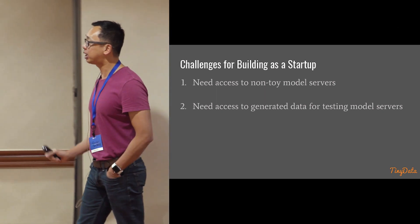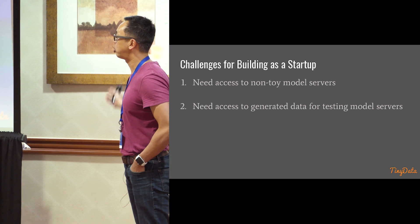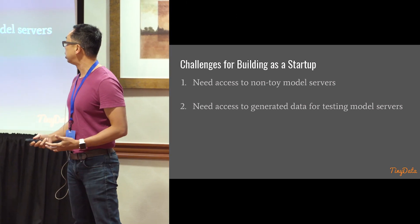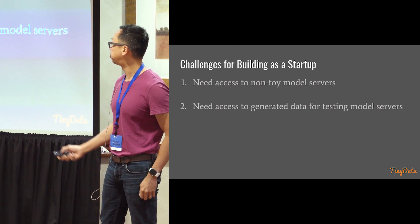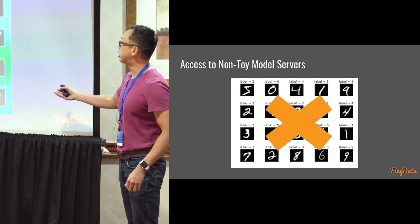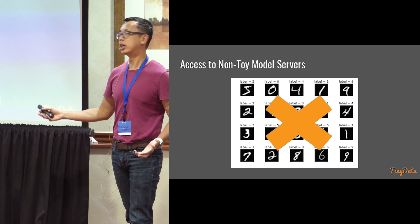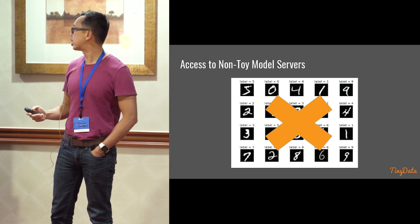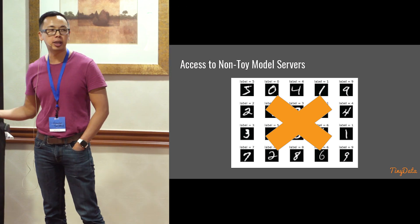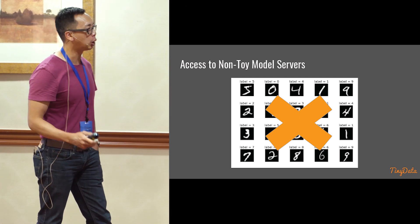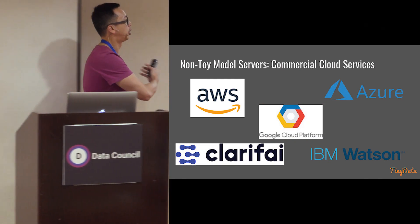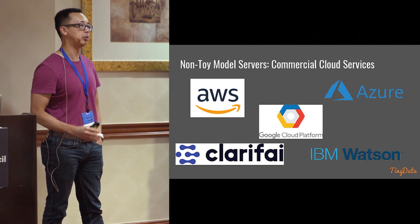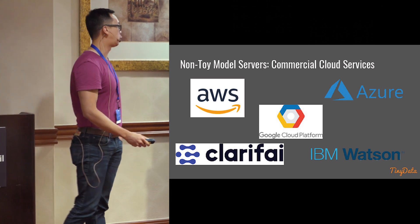Doing that is particularly hard as a startup. We needed two things we didn't have access to: real, robust model servers for testing — not toy-based ones — and access to real data so we could see the outcomes. Rather than spending time building and training our own model, we realized we could skip that step. There were a ton of non-toy model servers out there in the form of commercial API services. These vendors all provide different types of cloud AI services — from text analysis to translation to image recognition.